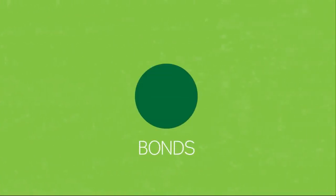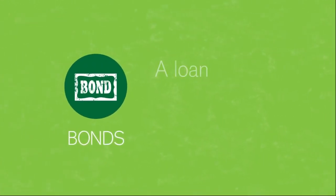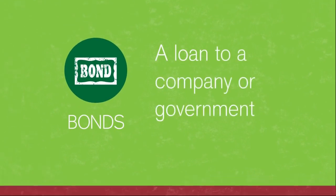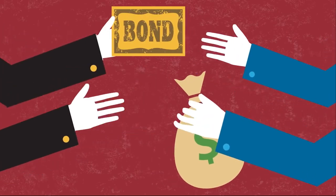Next up, bonds. Bonds are just a loan to a company or government. They borrow by selling a bond, which is simply a promise to repay the buyer in a fixed number of years at a fixed interest rate.